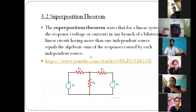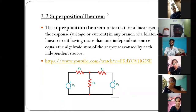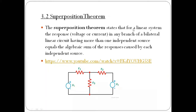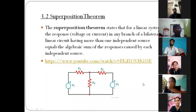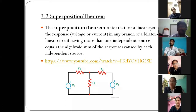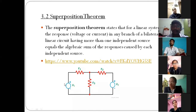That is nothing but superposition theorem. We will observe the statement: in a linear system, the response in any branch of a bilateral linear circuit having more than one independent source is equal to the algebraic sum of the responses caused by the independent sources acting alone.